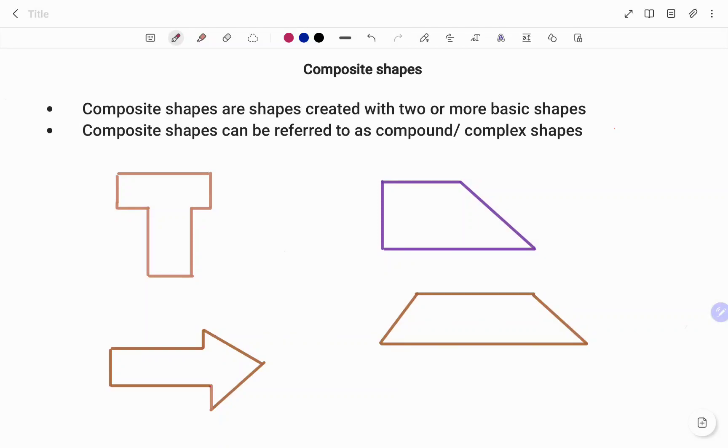Hi everyone, this is your math guru. In this video we are going to talk about composite shapes. A composite shape are shapes created with two or more basic shapes and they can be referred to as a compound or a complex shape.